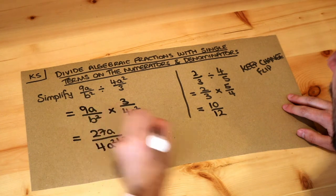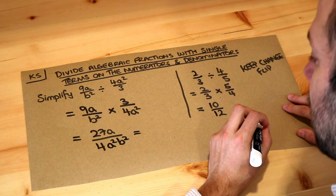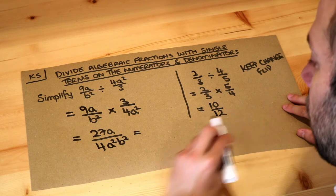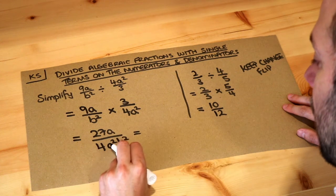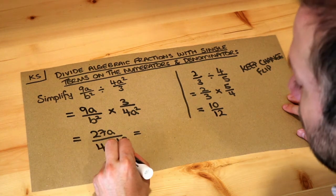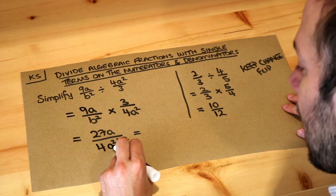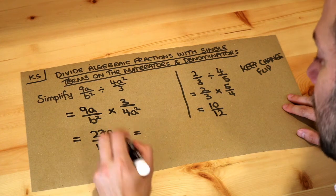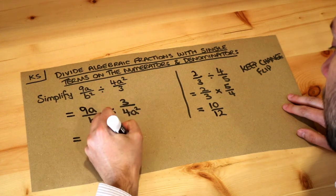And then we see how could we simplify this fraction? Well notice we've got an a at the top and we've got an a squared at the bottom. If you imagine that a squared as a times a, then we can get rid of one of those a's by dividing top and bottom of this fraction by a.